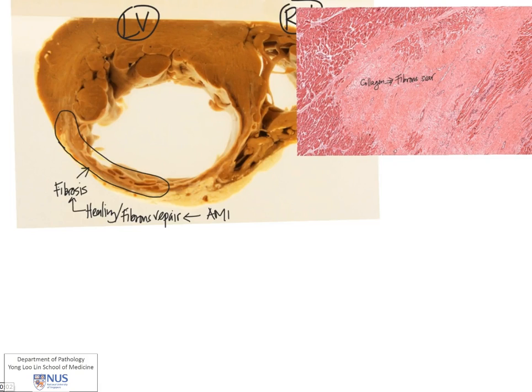So one of the possible outcomes is that the whole ventricle can start to dilate, because the left ventricle is a very high-pressure chamber, and when it dilates, we can get aneurysm formation.